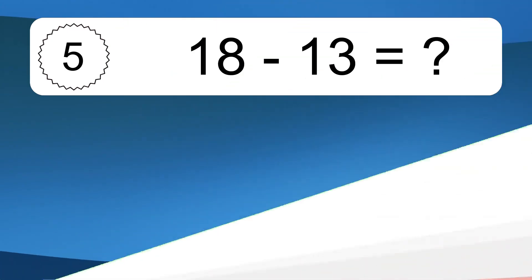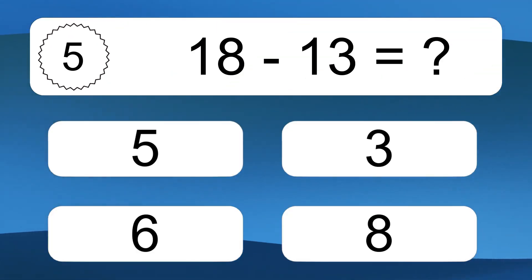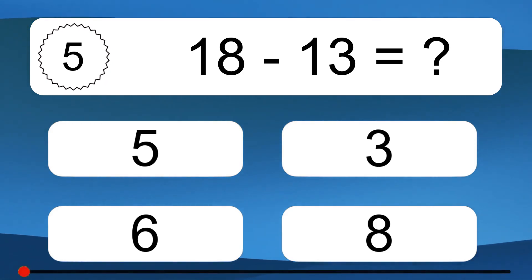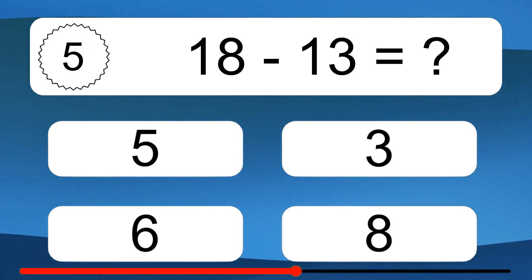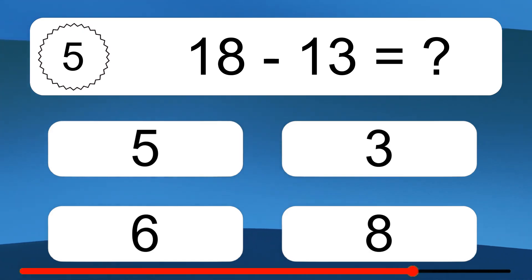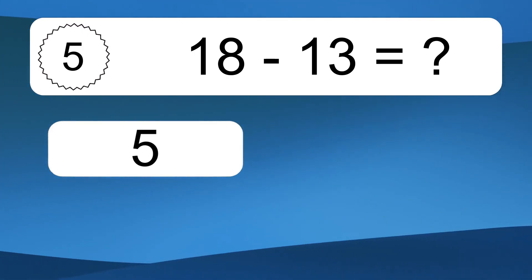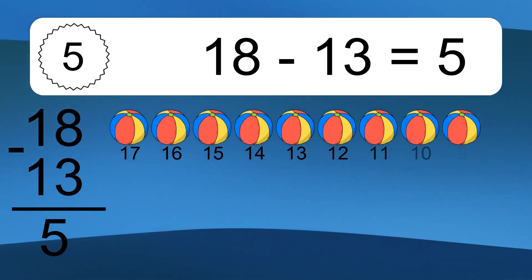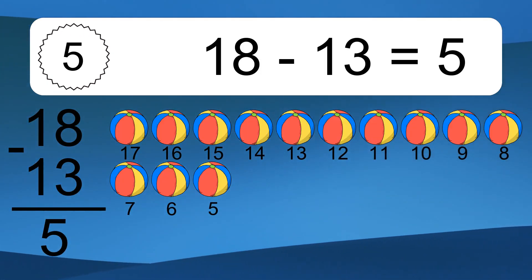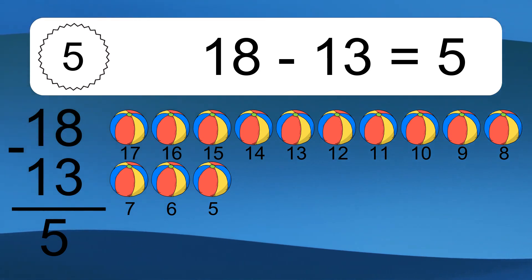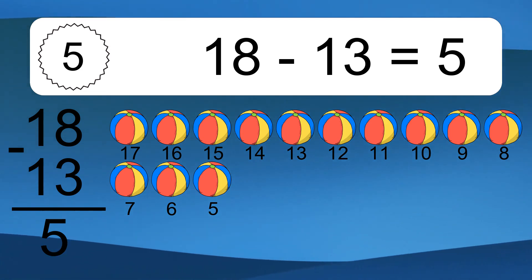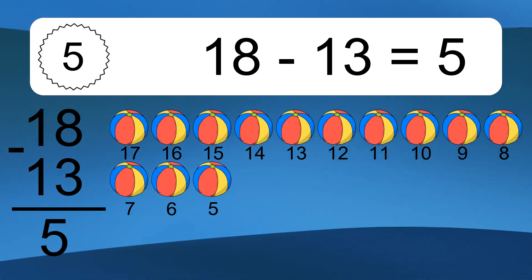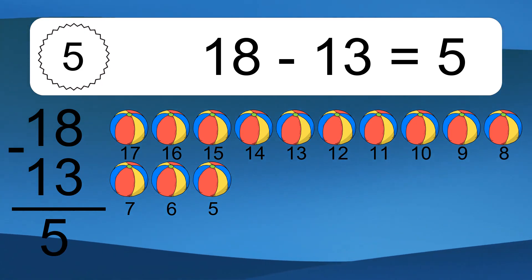18 minus 13 equals what? 18 minus 13 equals 5. Let's count it: 17, 16, 15, 14, 13, 12, 11, 10, 9, 8, 7, 6, 5.